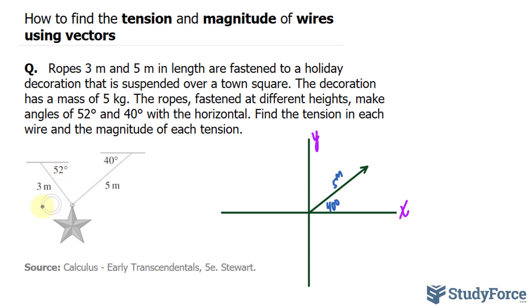Similarly, if that's 52, then the angle with respect to the horizontal will also be 52. That vector will look like this. In addition, we have this ornament hanging downwards that can also be drawn as a vector, shown in red.